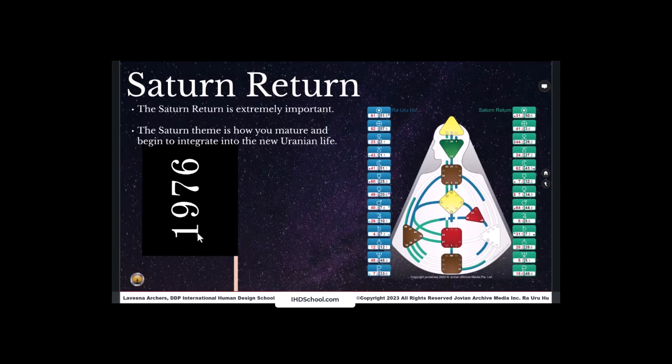For Ra, that happened in 1976. In teaching of the program, he saw that it was often more useful after the Saturn cycle was passed.